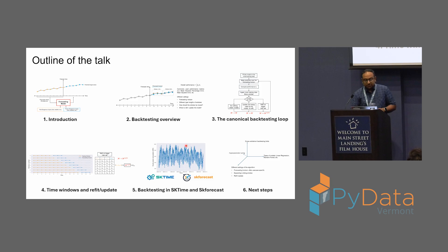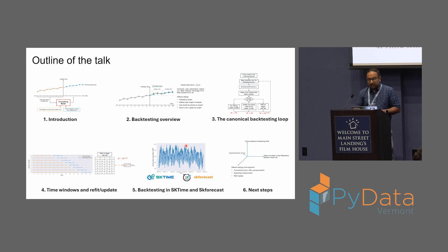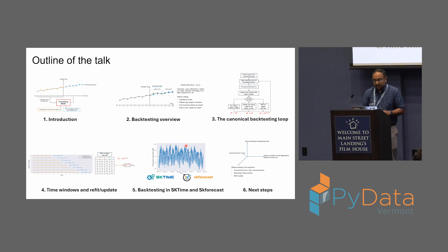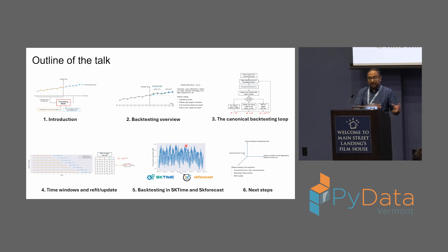The outline is as follows. I'll start by recapping what is time series forecasting and motivate the need for backtesting. We'll get a brief overview of the process and then get into the core iterative process at the heart of backtesting. We'll take a deeper dive into windowing functions for time series and what to do when new data becomes available. After that, we'll apply these concepts on an illustrative example from energy management using SK Time and SK Forecast, and finally think about next steps like hyperparameter tuning.